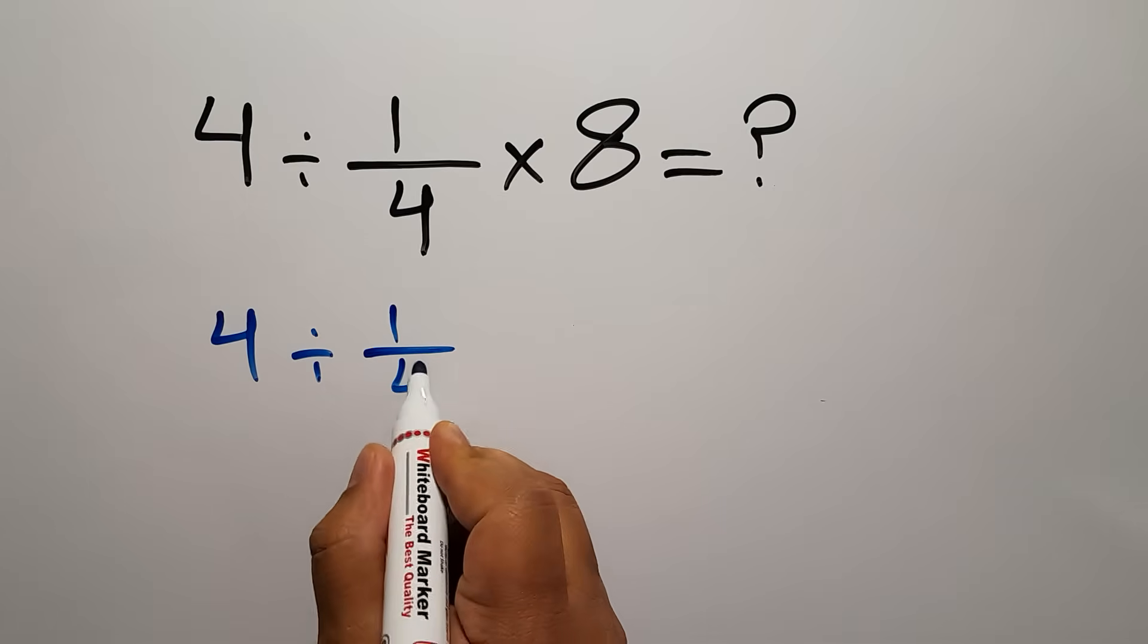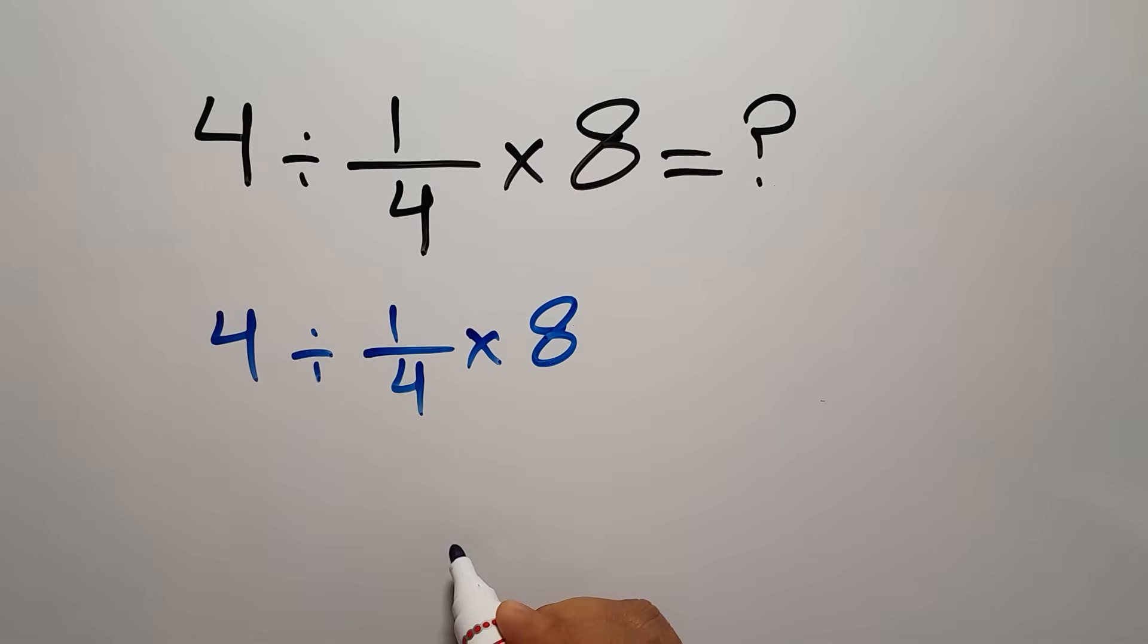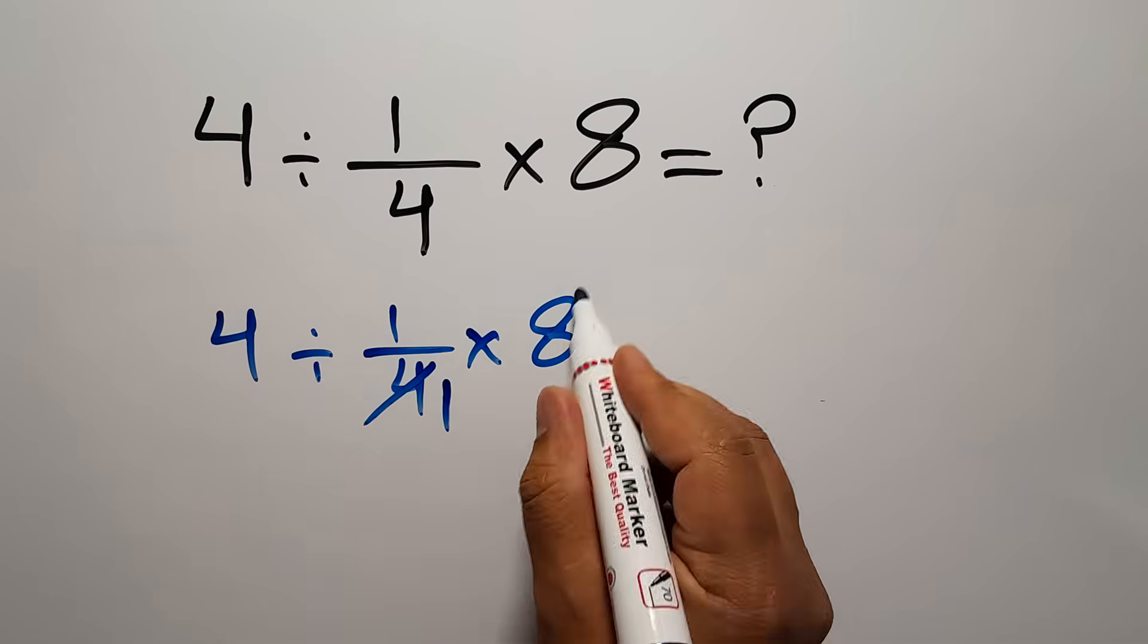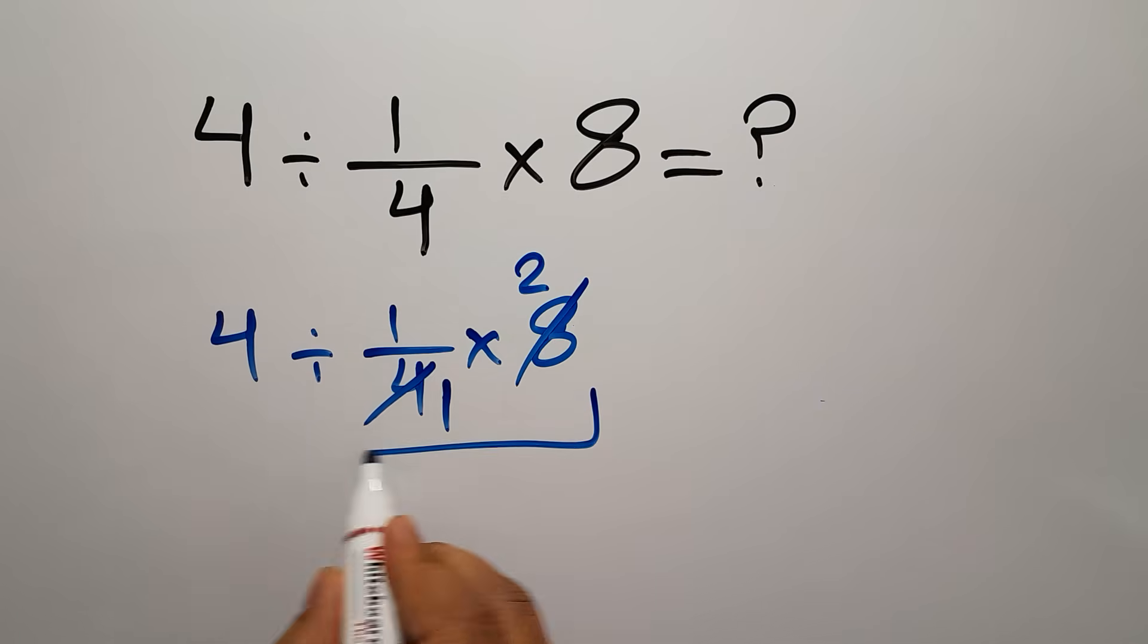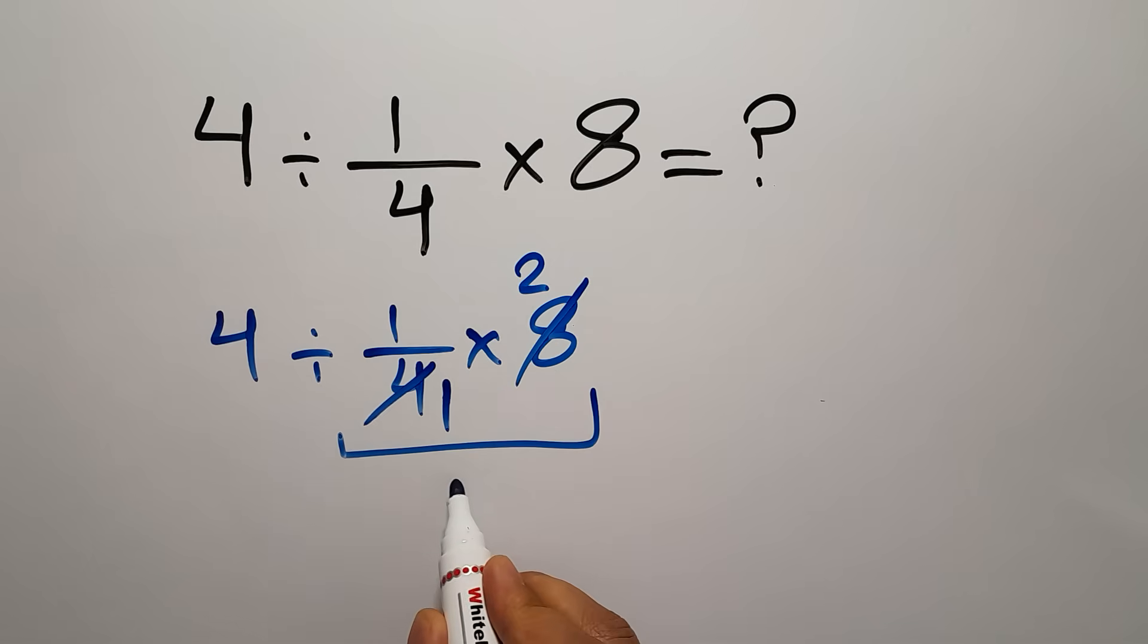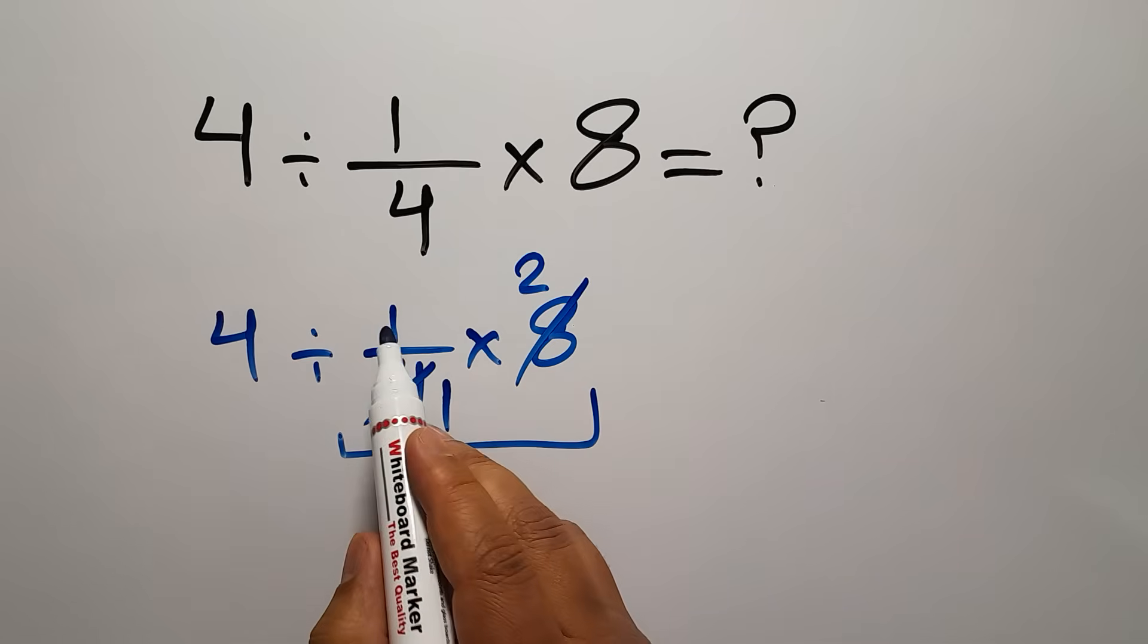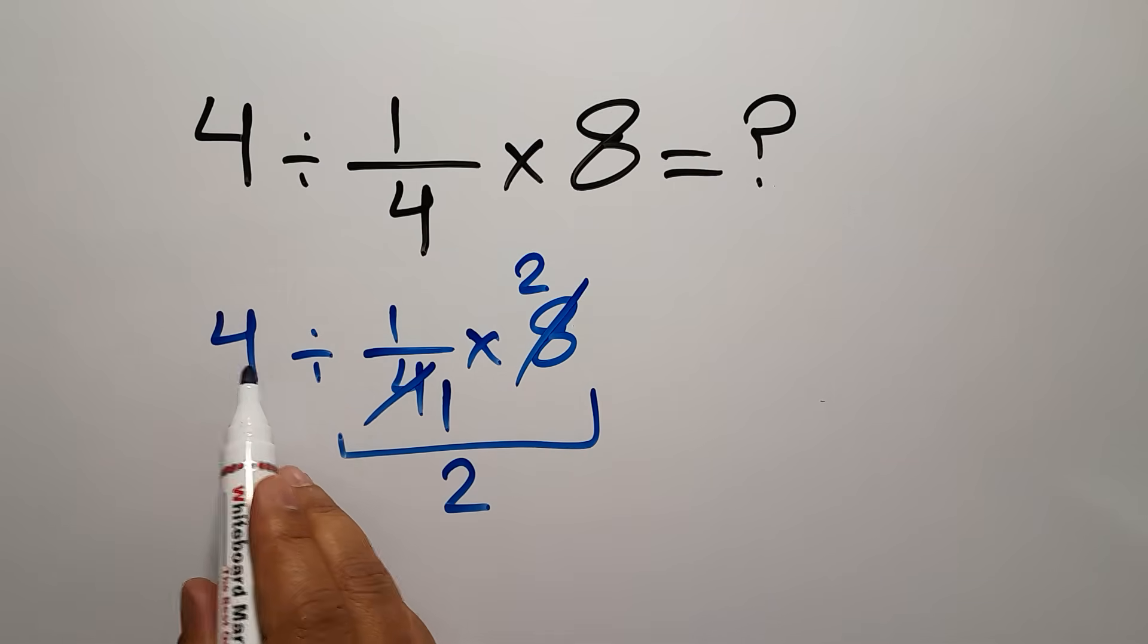We have 4 divided by 1 over 4 then times 8. 4 divided by 4 gives us 1 and 8 divided by 4 gives us 2. So 1 over 4 times 8 can be written as just 2. We have 1 times 2 gives us 2, and over 1 we can write 2.